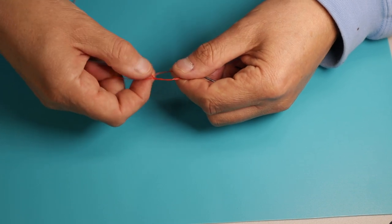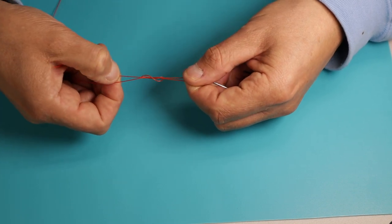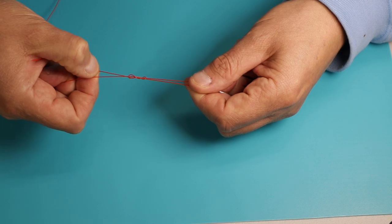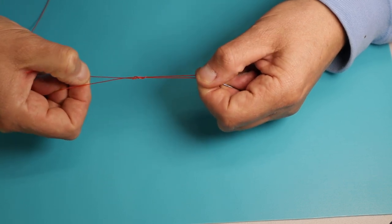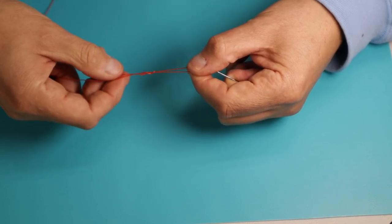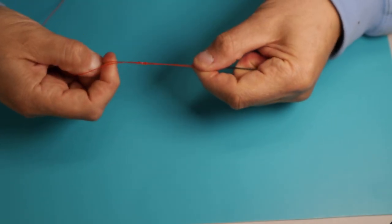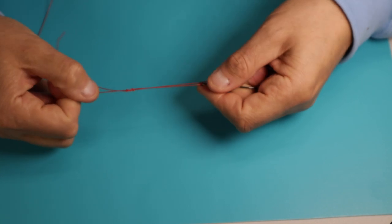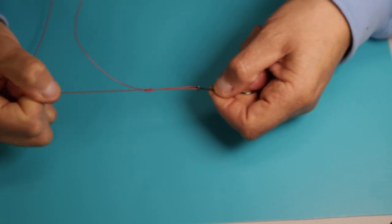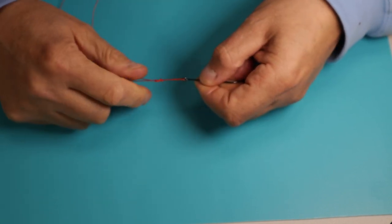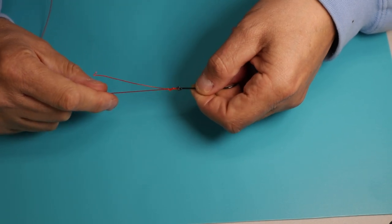You then start to draw the knot down with your tag end and it should start to coil back on itself. Now you need, very importantly, to lubricate the knot so you don't put any friction into it. Once you've lubricated your knot, continue to form it and pull it down. And now this is a sliding knot.